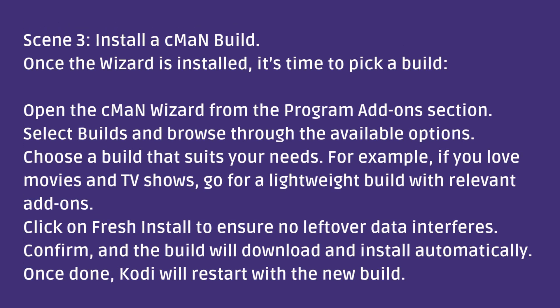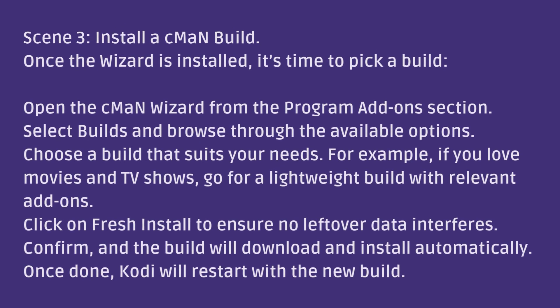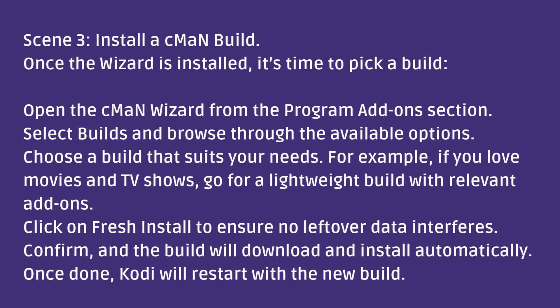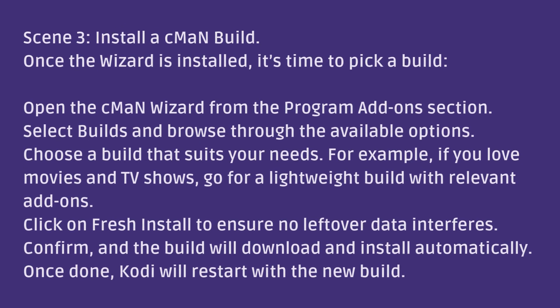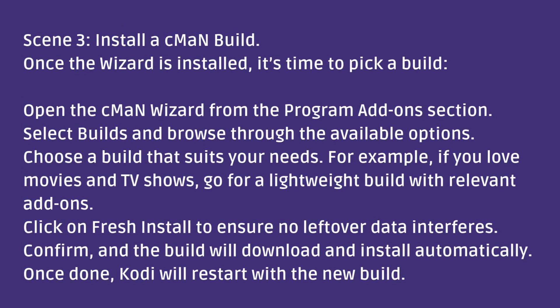Once the wizard is installed, it's time to pick a build. Open the CMAN Wizard from the Program Add-ons section. Select Builds and browse through the available options. Choose a build that suits your needs — for example, if you love movies and TV shows, go for a lightweight build with relevant add-ons. Click on Fresh Install to ensure no leftover data interferes. Confirm, and the build will download and install automatically. Once done, Kodi will restart with the new build.